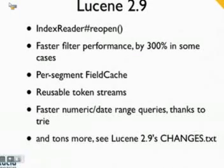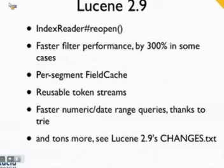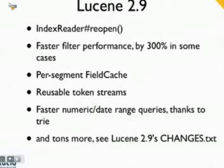Finally, we'll mention the numeric and date range query improvements thanks to trie fields. This allows for numerous precision steps to be indexed for a single number, thereby improving range query performance. We'll see more on that in just a bit.